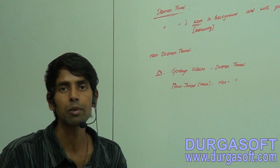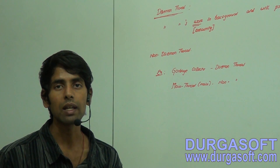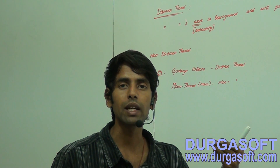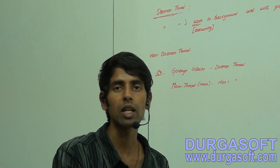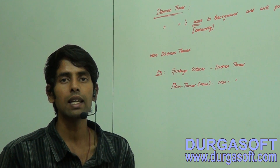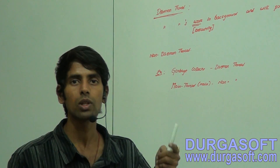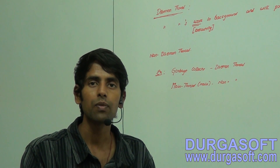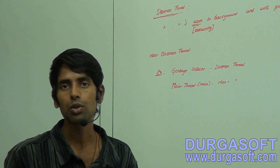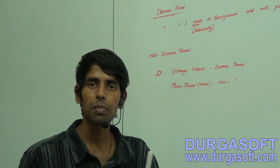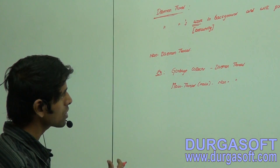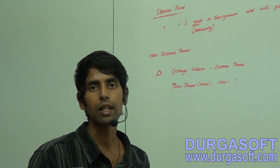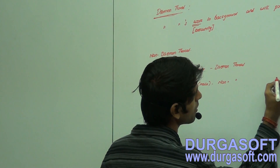Whenever the main thread is suffering from memory issues — unable to create new objects — the JVM will increase the priority of the daemon thread (garbage collector) to max priority and decrease the non-daemon thread priority. The higher priority thread executes first, so the daemon thread runs first to free memory by deleting useless objects.